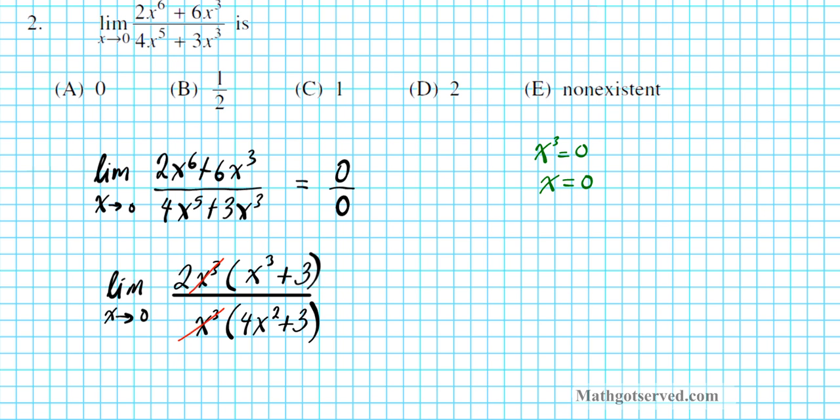All right, now, so this becomes, in fact, rather 2, 2 times the limit as x approaches 0 of x to the third plus 3 divided by 4x squared plus 3.